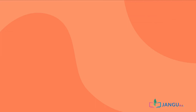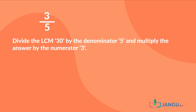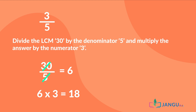The final fraction on the list is 3 over 5. We divide the LCM, 30, by the denominator 5, and multiply the answer by the numerator 3. 30 divided by 5 is 6. 6 times 3 is 18. Therefore, 3 over 5 is equivalent to 18 over 30.